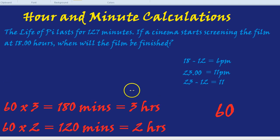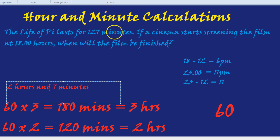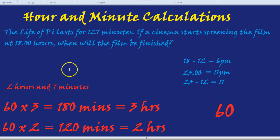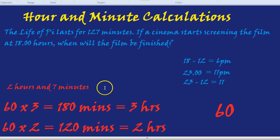Many students would say it finishes at 7:27pm because they see the 1 and the 27 from 127. But that 1 is like 100 — you can't treat it as 1 hour and 27 minutes. We always need to look at how many 60s go into the number. So 2 hours after 6pm is 8 o'clock, and adding 7 minutes gives 8:07pm.